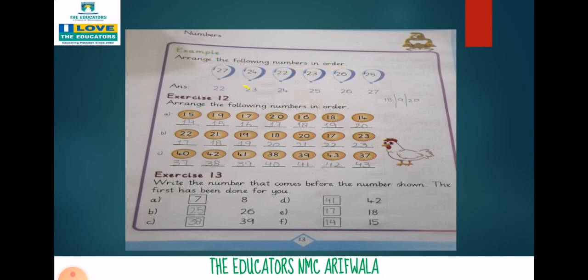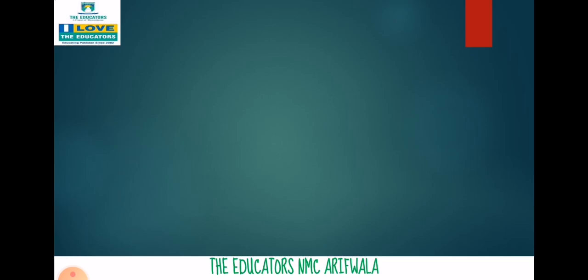Twenty-seven, twenty-four, twenty-two, twenty-three, twenty-six, and twenty-five. Here we will arrange the numbers in ascending sequence, like one, two, three, four. We will write the smallest number first. The smallest number is twenty-two, then twenty-three, twenty-four, twenty-five, twenty-six, and twenty-seven.